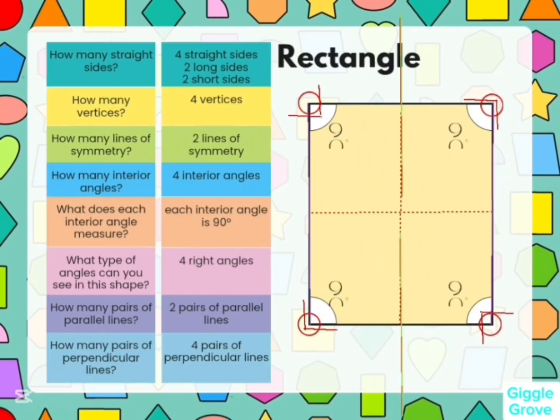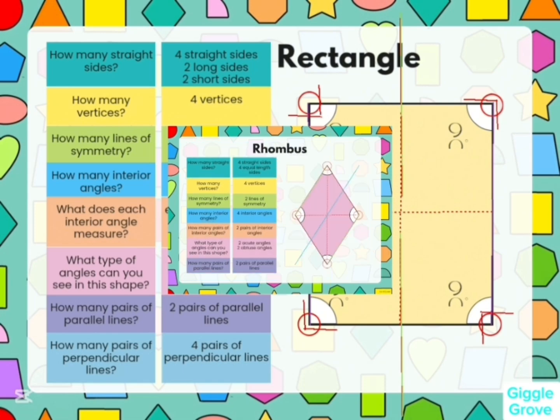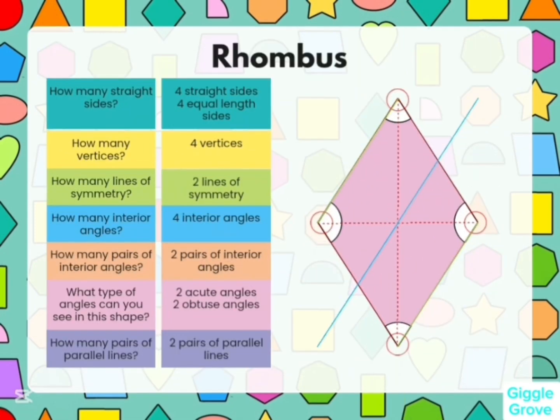Rectangle is having four straight sides — two long sides and two short sides — four vertices, two lines of symmetry, four interior angles. Each interior angle is 90 degrees: four right angles, two pairs of parallel lines, and four pairs of perpendicular lines.